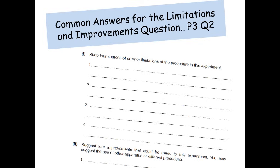Hi guys, today I want to talk about the practical exam again and I just want to focus on the very last page. Often it says that Cambridge is asking for limitations and improvements on the experiment that you've just done. So it's on Paper 3, Question 2. And you get something like state four sources of error or limitations for the procedure in the experiment, and it also says suggest four improvements as well that could be made for the experiment.